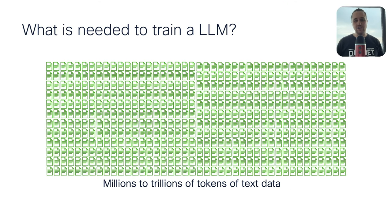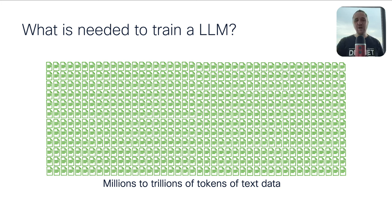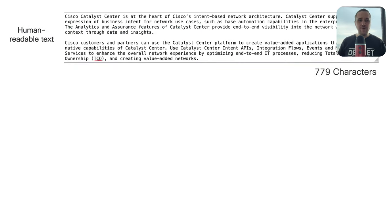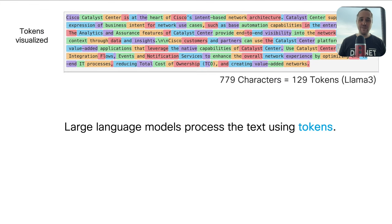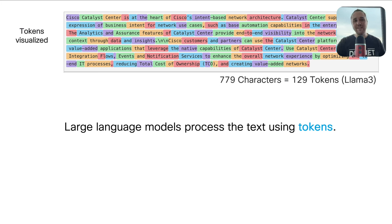What is needed to train an LLM? The answer is simple: millions to trillions of tokens of text data. Here is an example from Cisco Catalyst Center documentation — classic human-readable text of about 779 characters. A large language model doesn't understand text as we read it. It deals with tokens. You can see here that 'Cisco' is a token, 'space catalyst' is a token, 'space center' is a token — several tokens are converted.